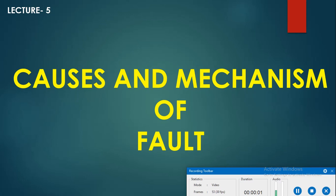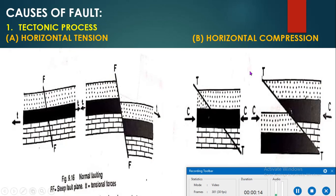Welcome back to structural geology. Let us start with causes and mechanisms of faults. Faults are produced from several causes — two types: tectonic causes and non-tectonic causes. In tectonic processes, forces operate within the crust of the earth. In non-tectonic processes, gravity forces are involved.